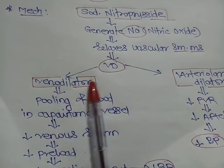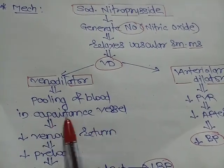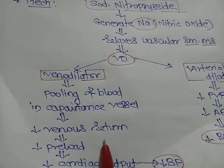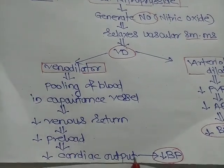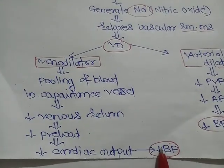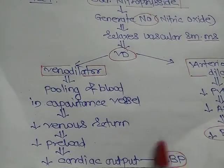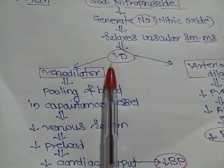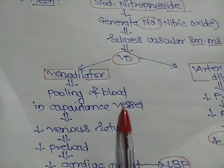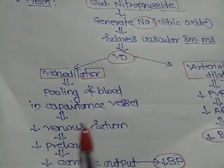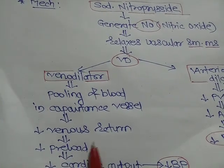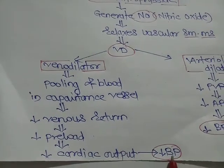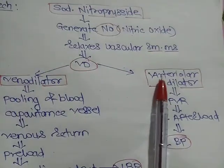As a venodilator, venodilatation causes pooling of blood in the capacitance vessels, decreasing venous return to the heart. This decreases preload and end-diastolic volume, leading to a decrease in cardiac output and hence a fall in blood pressure.